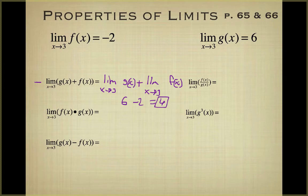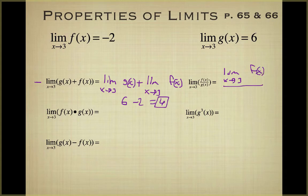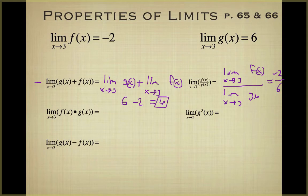Next we have the limit as x approaches 3 of f(x) over g(x). Again, I want to see you using these properties. We write it as the limit as x approaches 3 of f(x) divided by the limit as x approaches 3 of g(x). That gives us negative 2 over 6, which simplifies to negative 1/3.